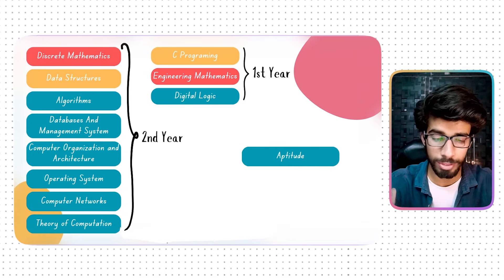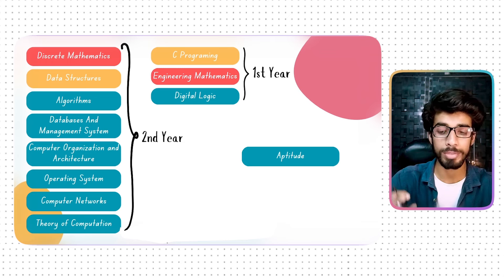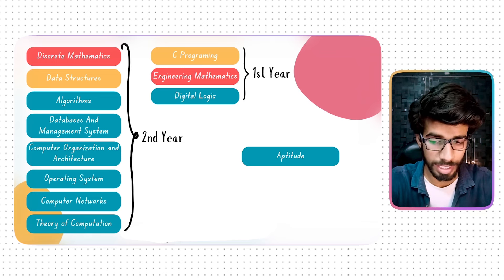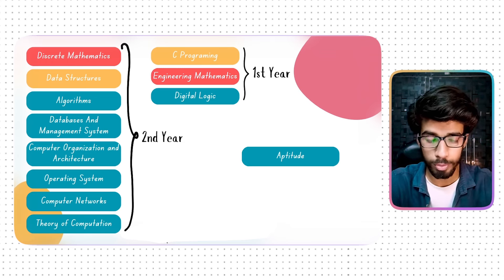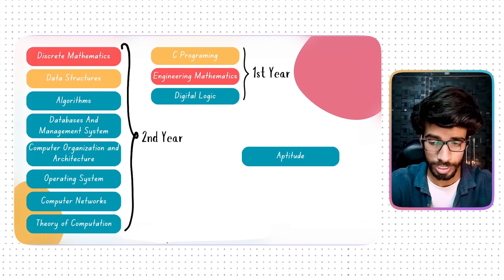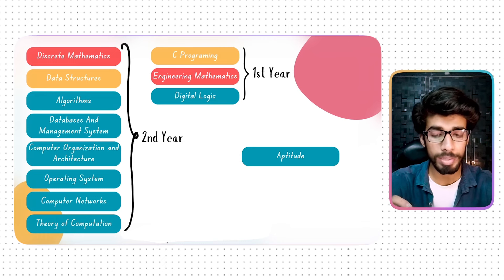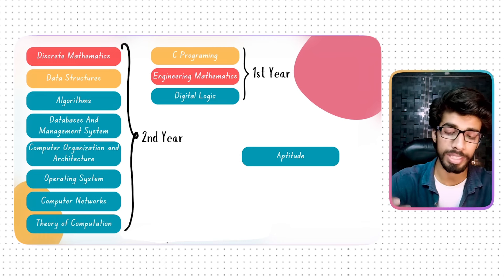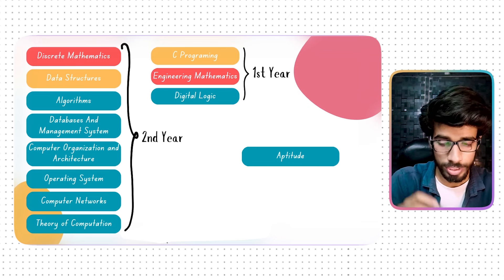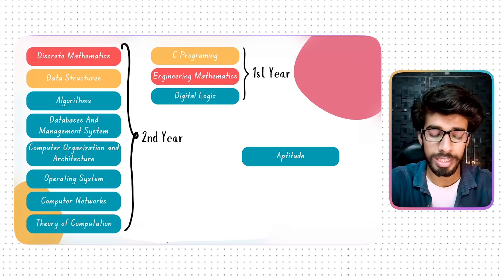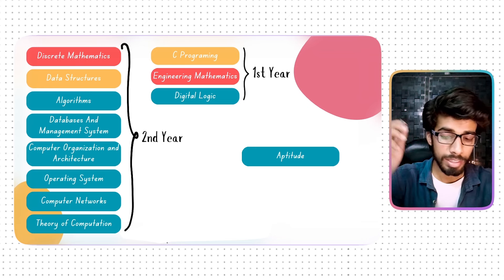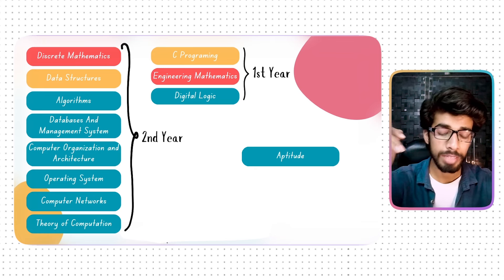Next we will talk about which subjects you can study in engineering and in which year. Here I have shown that in the first and second year, the majority of the subjects you can study. For example, I have listed C Programming, Engineering Mathematics, and Digital Logic in the first and second year.